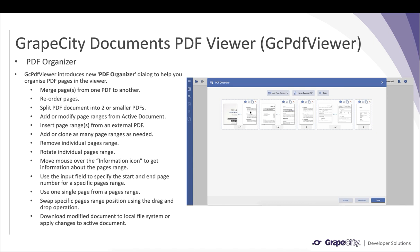You can remove individual pages or a range, rotate individual pages or a range, move the mouse over the information icon to get information about a pages range, use the input field to specify the start and end page number for a specific pages range, use one single page from a pages range, and swap specific pages range positions using drag and drop.